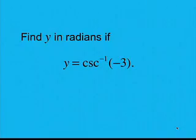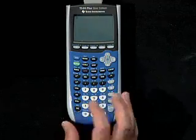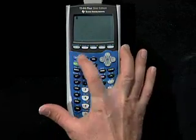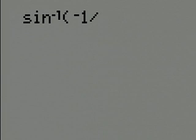Now let's take a look at an example of finding one of these co-inverse functions. Find y in radians if y equals cosecant inverse of negative three. Make sure your calculator is in radian mode. Enter the following: take sine inverse (second sine), then negative, and the reciprocal of three is one divided by three. Close the parentheses and hit enter. The result is approximately negative 0.3398. Therefore, that gives us the value of the inverse cosecant by using inverse sine of the reciprocal.